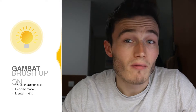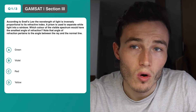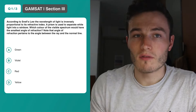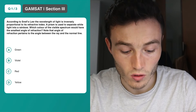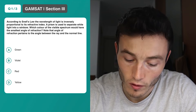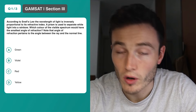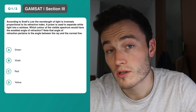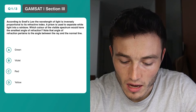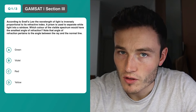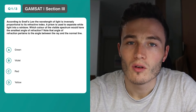Take the time to think about those ideas before we tackle some questions. We're going to jump straight into a couple of questions that will help you think about some of the ideas that often come up in waves. The first of which is Snell's Law. According to Snell's Law — question one: the wavelength of light is inversely proportional to the refractive index. A prism is used to separate white light into a rainbow. Which color of the visible spectrum would have the smallest angle of refraction? Note that the angle of refraction pertains to the angle between the ray and the normal. Pause the video and think about that question.